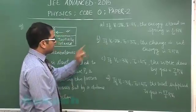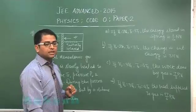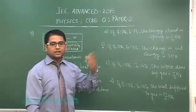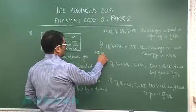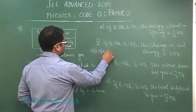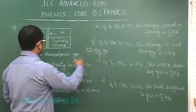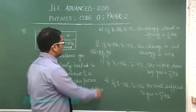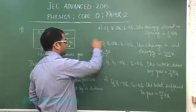Because option B is straightforward: the final volume is given, final temperature is given. By using PV equals to NRT, we can also calculate the final pressure. And delta U is P2 V2 minus P1 V1 by gamma minus 1, where gamma would be 5 by 3, which would exactly give us this particular value of change in internal energy.